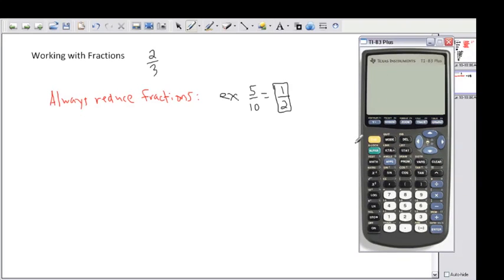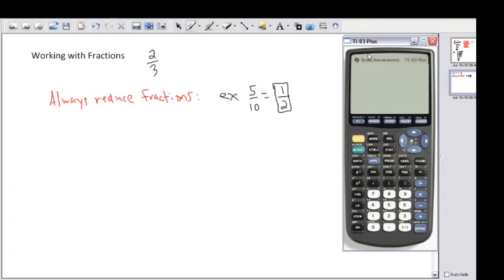Now if you use your calculator, the TI-83 which is very commonly used, or the TI-84, it has a nice function that allows you to be lazy. If I put in 5 divided by 10, it automatically gives me the decimal. If I want to convert that to a fraction, it'll convert it to a reduced fraction. I just press math, then convert to fraction, press enter, and then enter again.